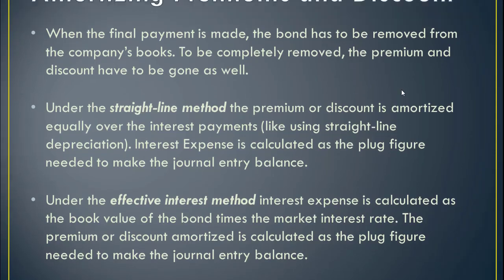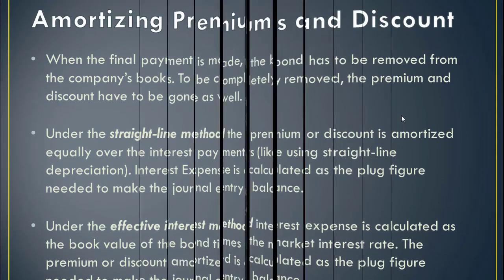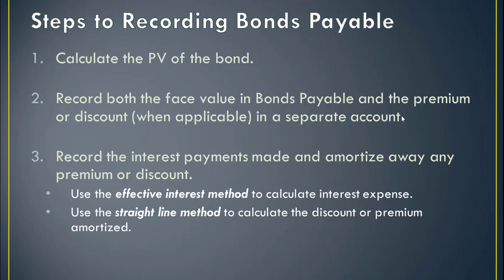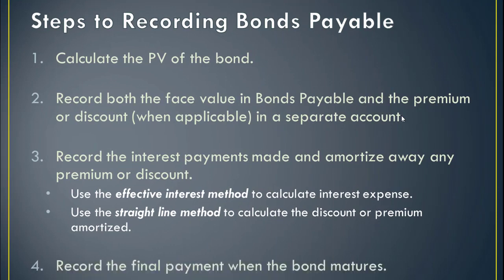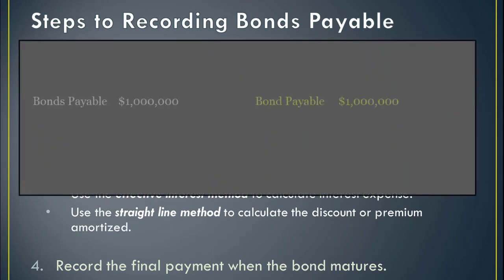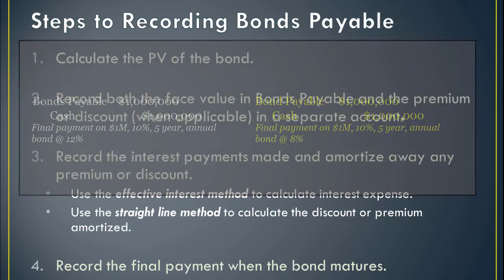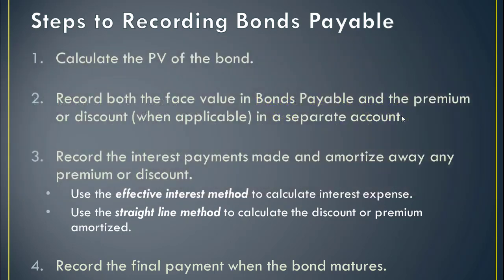Let's go back to our steps on recording bonds. We've talked about the first three. The last step is to record the final payment when the bond matures — that's just a debit to bond payable and a credit to cash, and then we'll be done. Lots of concepts — let's do an example, because I think we really need one.